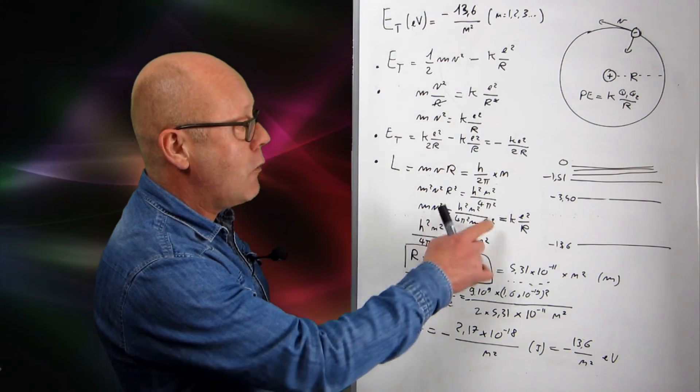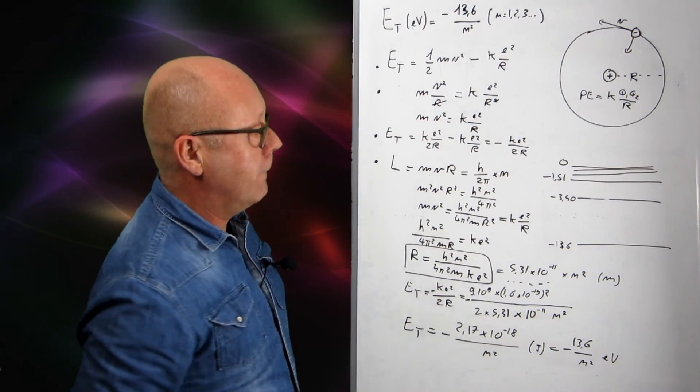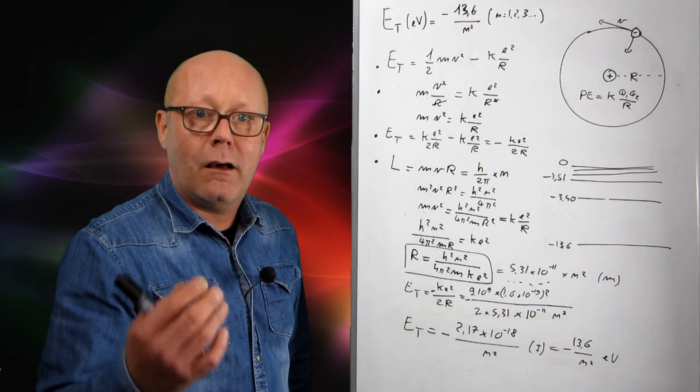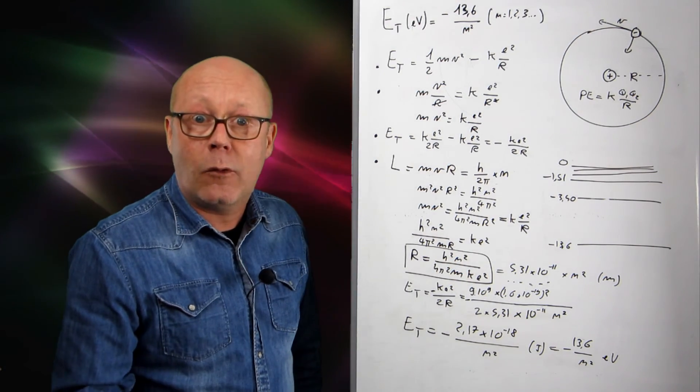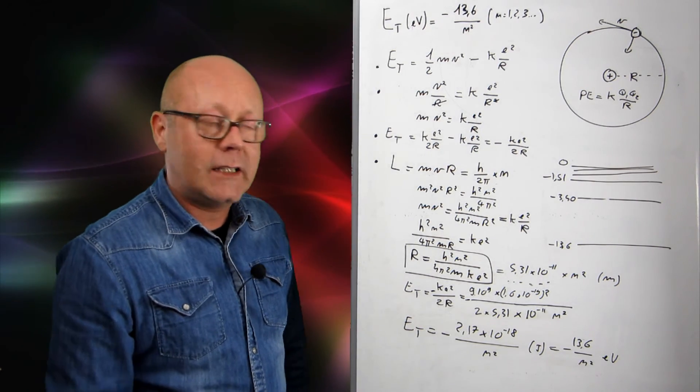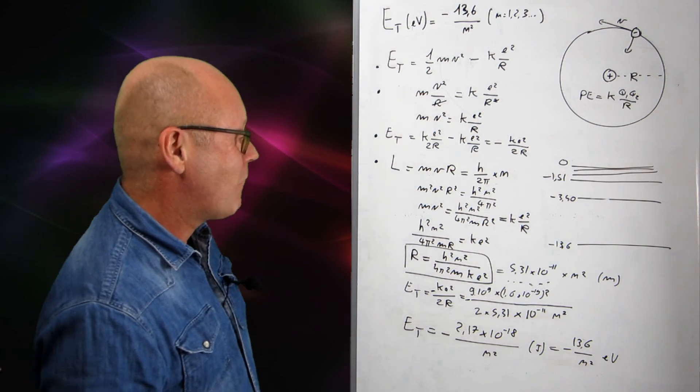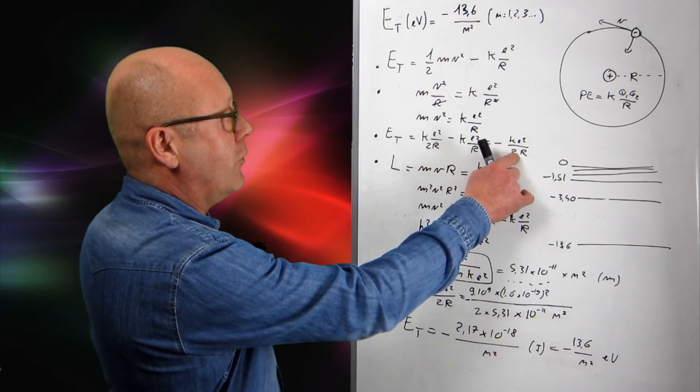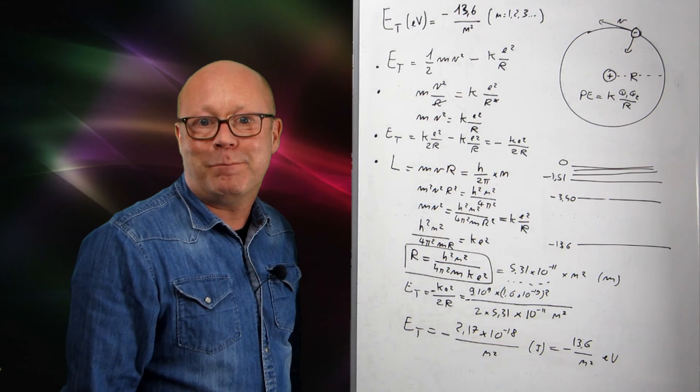After squaring it, you can rearrange to get mv squared and inject it in here. So, basically, you can equate it to that. And then, you can rearrange to find the radius, which will only depend on constants, universal constants, and n that you set at 1 for the ground state of the atom. So, you find the radius of the ground state of the atom. Now, you can just inject the radius into the expression of energy here. And you obtain this equation.